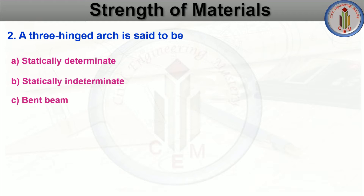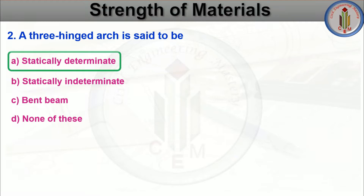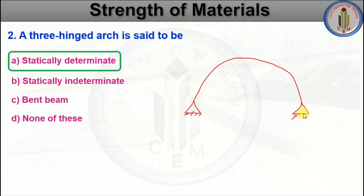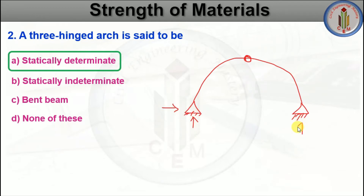The three hinged arch is said to be — statically determinate, statically indeterminate, bent beam, or none of these. This is a very important question in many interviews. A three hinged arch is said to be a statically determinate structure. A three hinged arch has two hinged supports at both ends and one internal hinge at the top of the crown. Each hinged support provides one vertical reaction and one horizontal reaction.